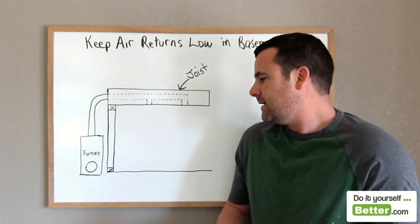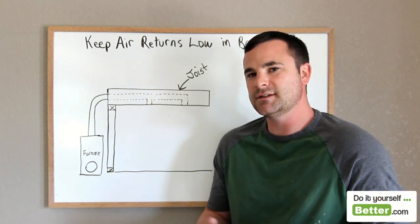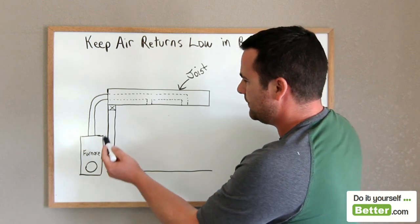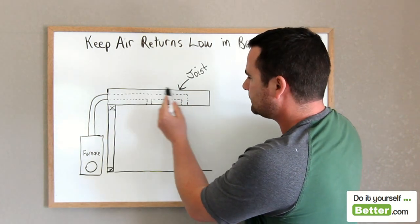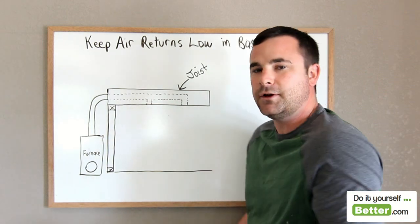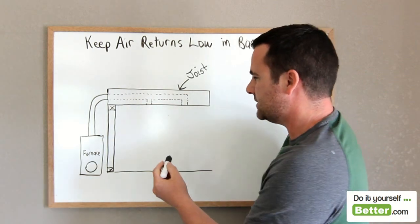Here is just a simple mock-up of how your furnace works, how air return and supply ducts work as well. I've just mocked this up. This is my joist showing my ceiling. The dotted line is showing the ducting and your air supply or your air registers or your heat registers.